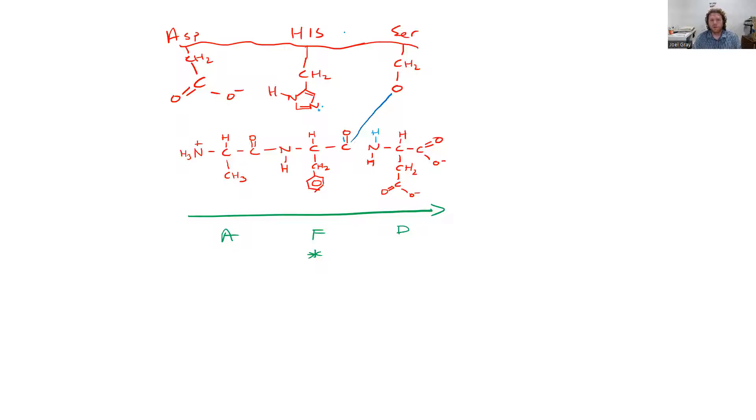So an update on all of the different players involved. Our histidine amino acid within our enzyme has returned to its position that it originally was, where it's deprotonated and has a lone pair of electrons. Serine still gives us a covalent bond between our enzyme and our substrate.